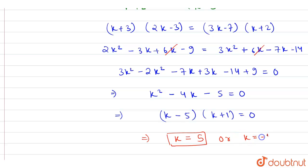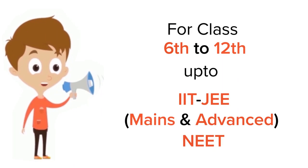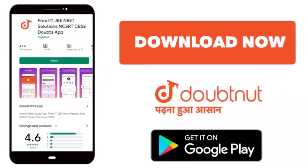Or K is equal to -1. Thank you. For class 6 to 12, IIT-JEE and NEET level, trusted by more than 5 crore students. Download DoubtNet app today.